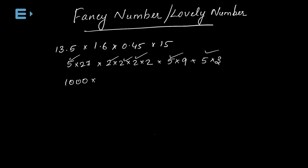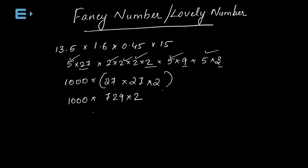1000 into 27. Now we have 27 squared, which is 729. Then we have 729 into 2. We count the decimal points: 1, 2, 3, 4. This gives us the answer to the point.